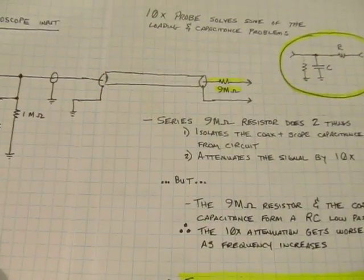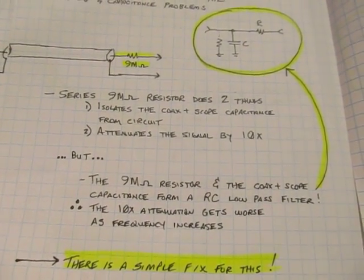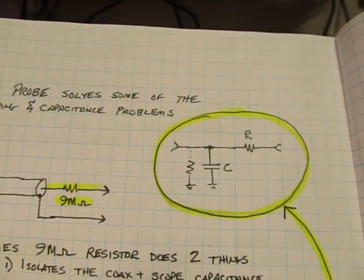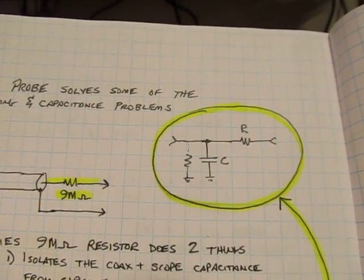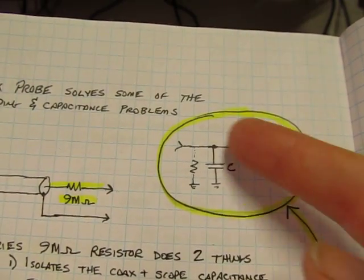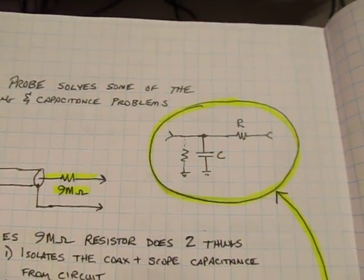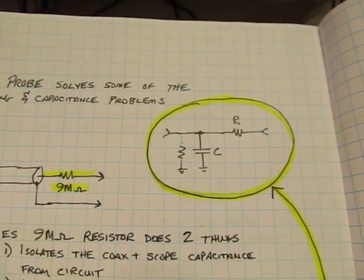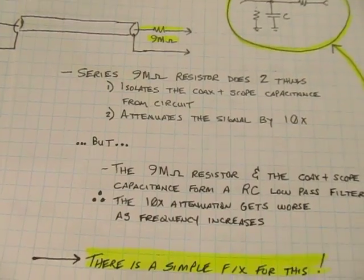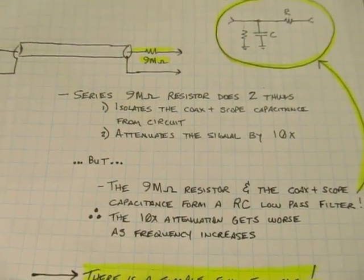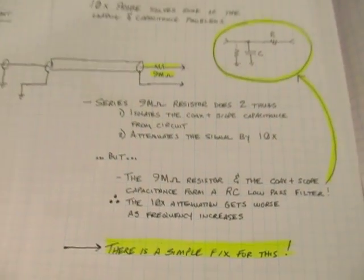Now the problem that you can run into, though, is that the 9 megaohm resistor and the capacitance of the coax and the scope form an RC low-pass filter that looks like this. And what happens is as the frequency goes up of what we're looking at here, the capacitive reactance here starts going down, and all of a sudden the 10X divide ratio that we had because of this resistor starts getting dominated by the capacitive reactance of that capacitor, and we start rolling the signal off, so it's a low-pass filter. So now as the frequency increases, our 10X attenuation got worse and worse and worse. So it didn't really help us that much, but there's actually a pretty simple fix for this, and this is what's typically done with 10X probes.